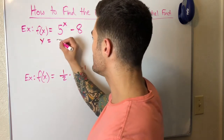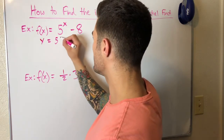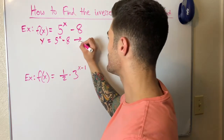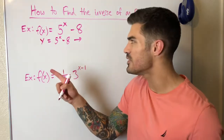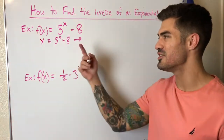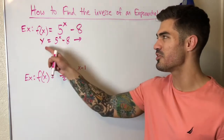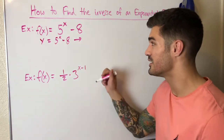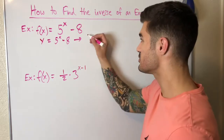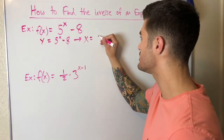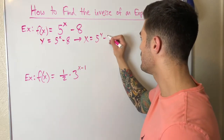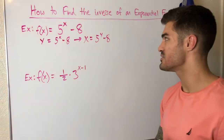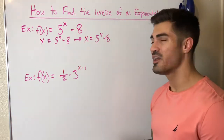I'm going to replace f(x) with y because y is easier to deal with, especially when we start switching the position of x and y. So now I'm switching the position of x and y, giving me x equals 5 to the y minus 8.